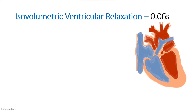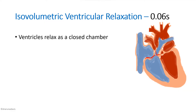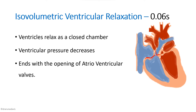This is followed by isovolumetric ventricular relaxation. Again, all valves — AV and semilunar — are closed, so the ventricle relaxes as a closed chamber. Volume remains constant while pressure falls. This phase ends when ventricular pressure drops low enough to allow the atrioventricular valves to open.